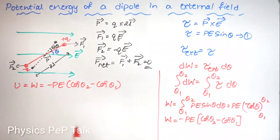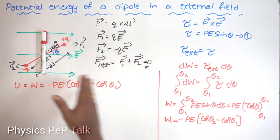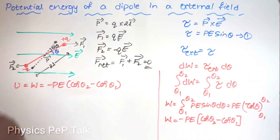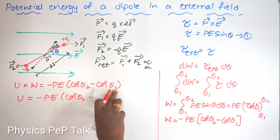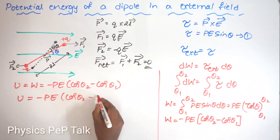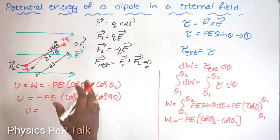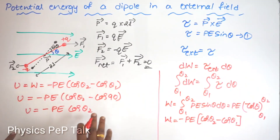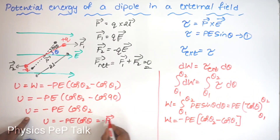Now, as a special case, let me consider that the initial position has the angle between the electric field and the dipole moment equal to 90°, so θ1 = 90°. Then the potential energy becomes U = −PE (cos θ2 − cos 90°). Since cos 90° = 0, the potential energy of a dipole in an external field becomes U = −PE cos θ, which can be written as the dot product: U = −P · E.